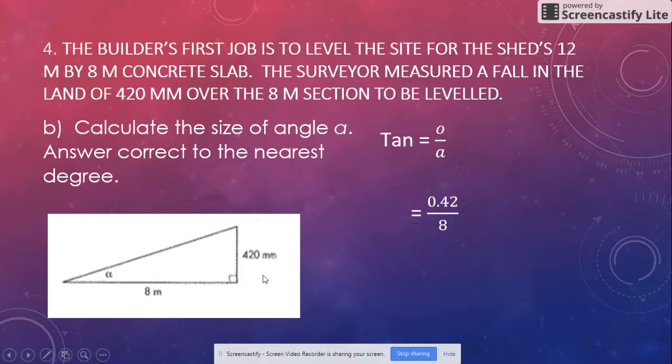0.42 divided by 8. Remember this is going to be tan⁻¹. 0.42 divided by 8, get our answer, bring it to the nearest degree and make sure you put your degree sign.